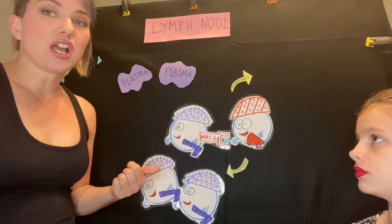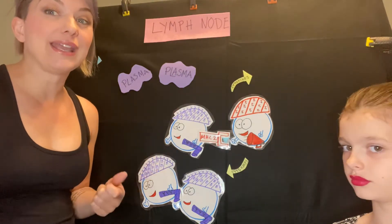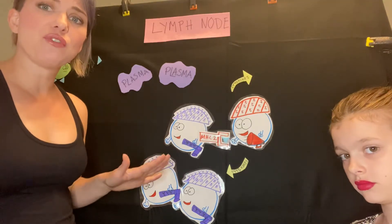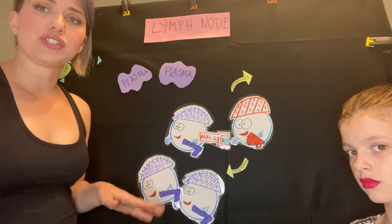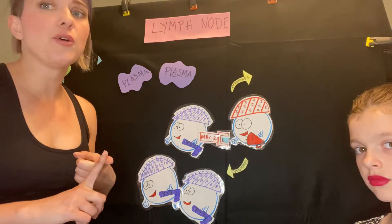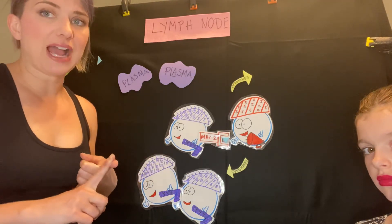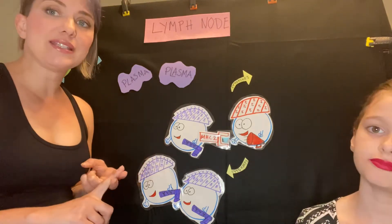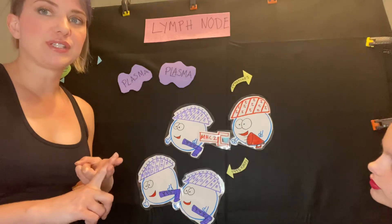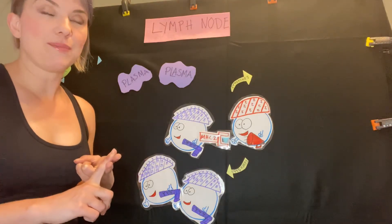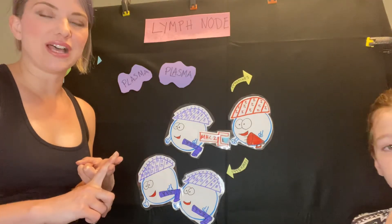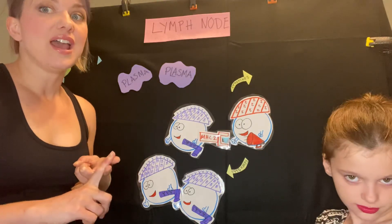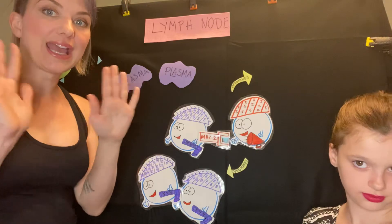Next video, we're going to talk about what happens when we get an intracellular infection. All this stuff we've talked about so far is for extracellular pathogens — the dendritic cell eating an extracellular pathogen and presenting it on its MHC class 2, and the B cell encountering an extracellular pathogen and presenting it on its MHC class 2 to the T helper cell. Next, we're going to talk about intracellular pathogens. Bye guys.